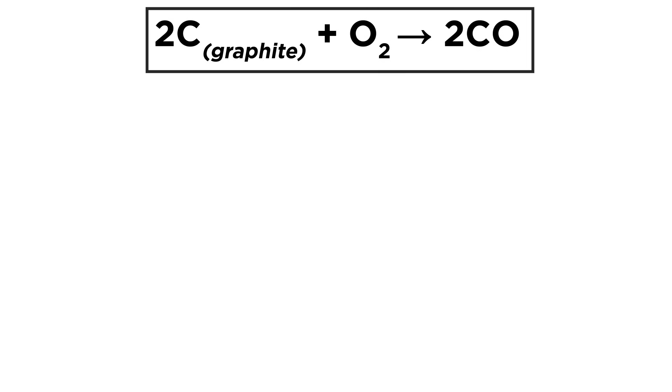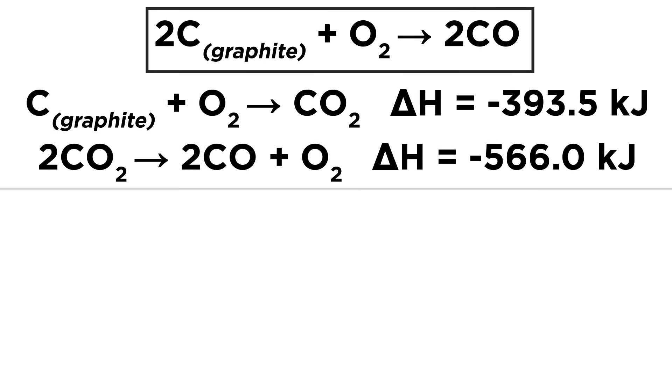Let's say we want to know about the change in enthalpy associated with a reaction, like this one, but it is difficult to measure experimentally. We can take other reactions with known enthalpy changes and rearrange them to align with our equation and get the data we want.